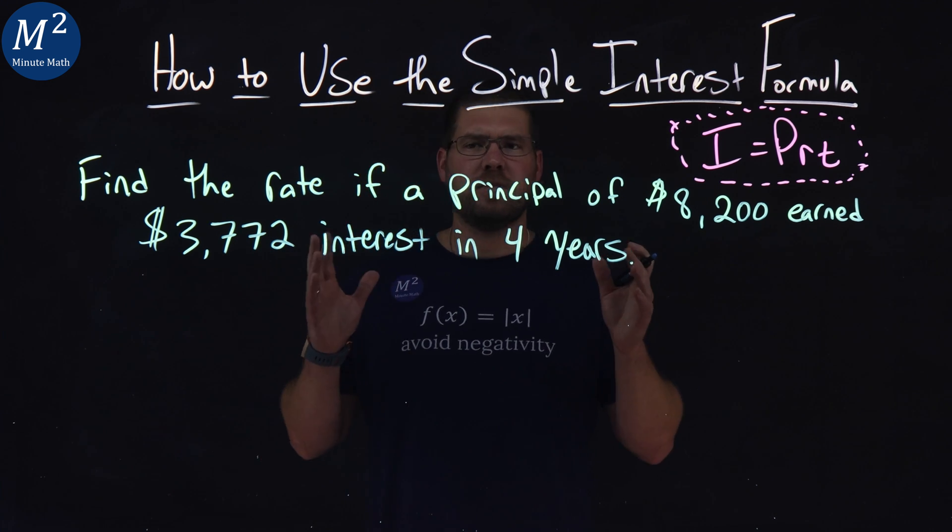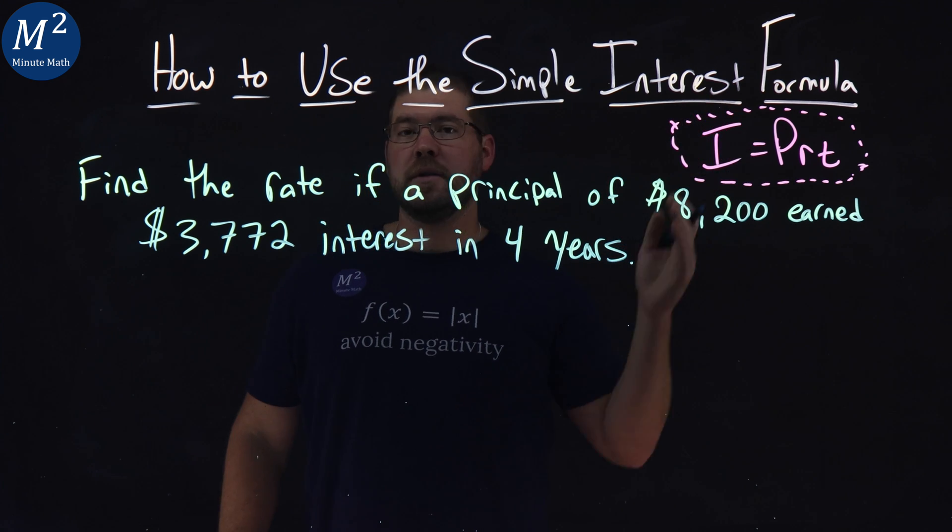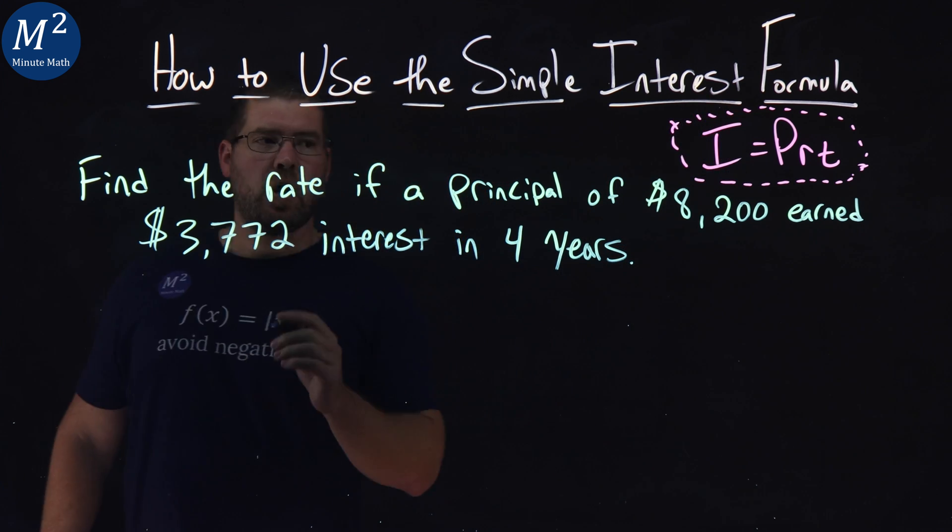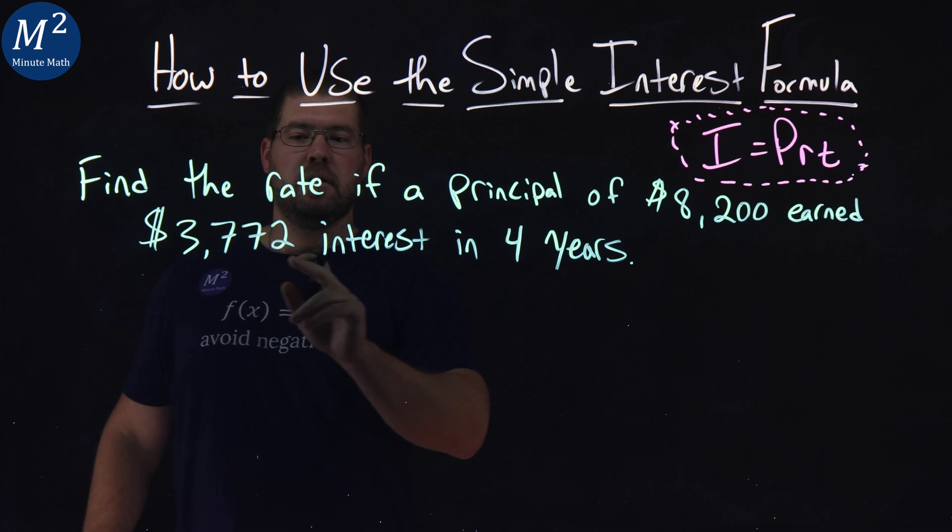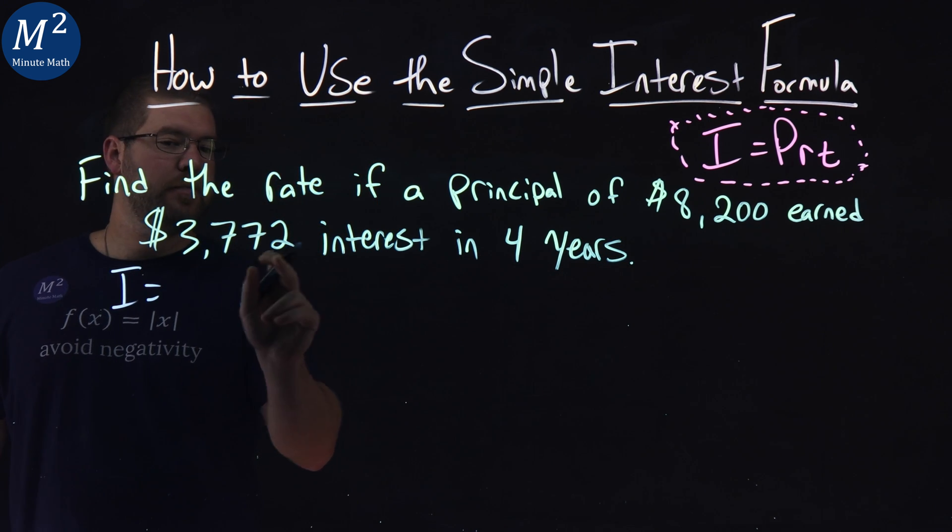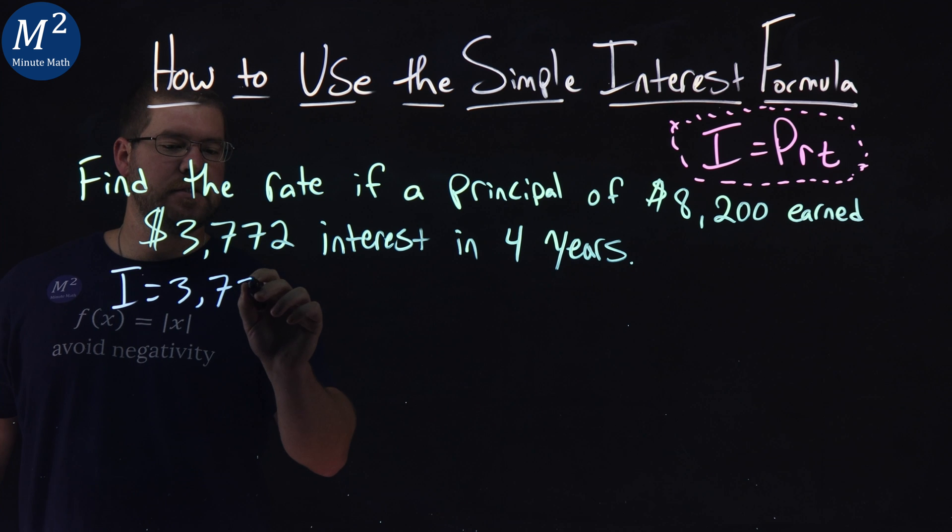First we've got to set up what we know from our formula, I equals PRT. Our interest, we know I, right here, they tell us $3,772.